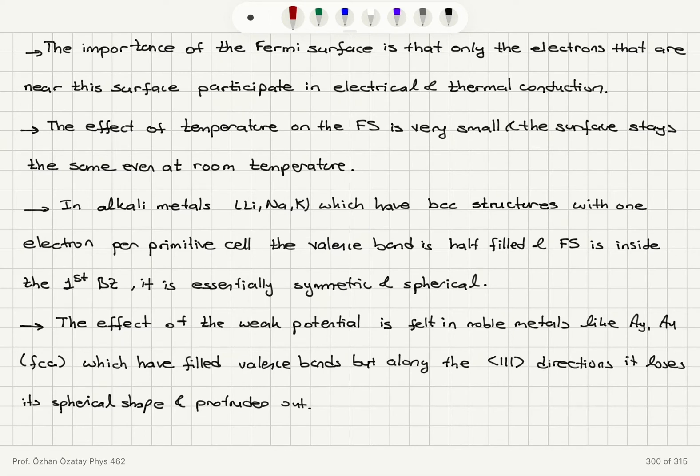In alkaline metals like lithium, sodium and potassium, which have BCC structures with one electron per primitive cell, the valence band is half filled and the Fermi surface is inside the first Brillouin zone. It's essentially symmetric and spherical.